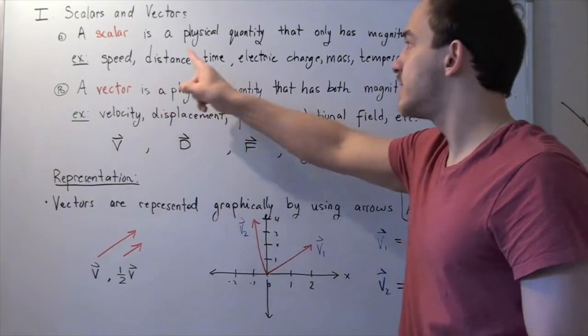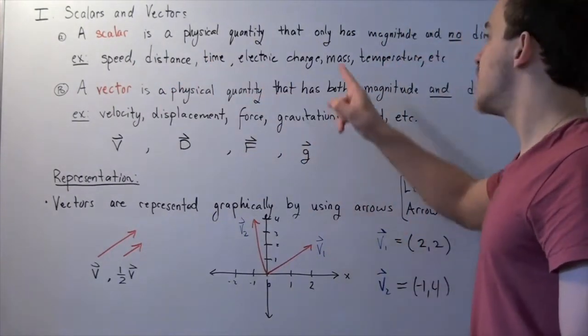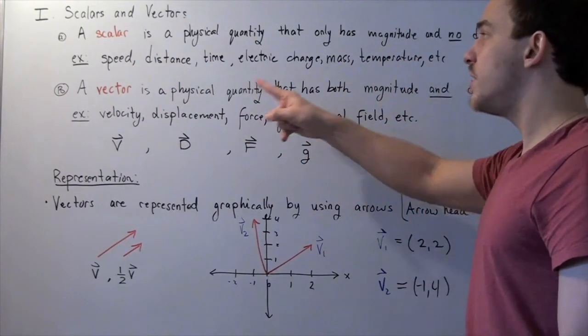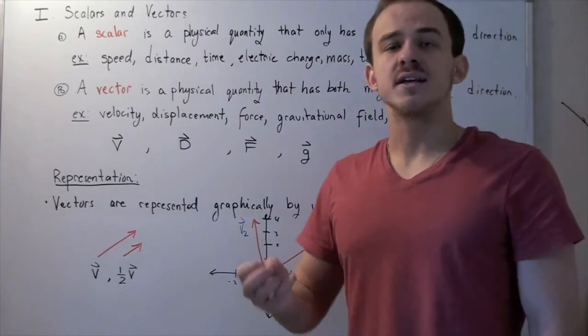all these are examples of scalars. So speed, distance, time, electric charge, mass, temperature—all these have no sense of direction.